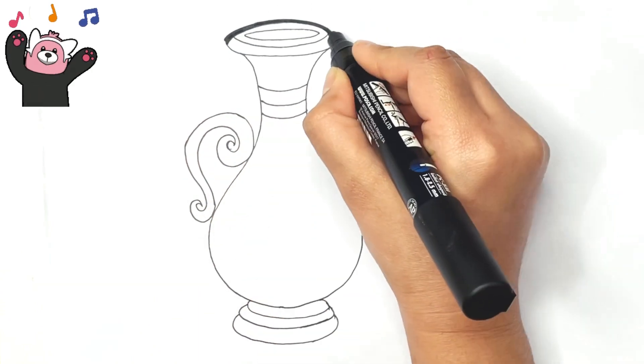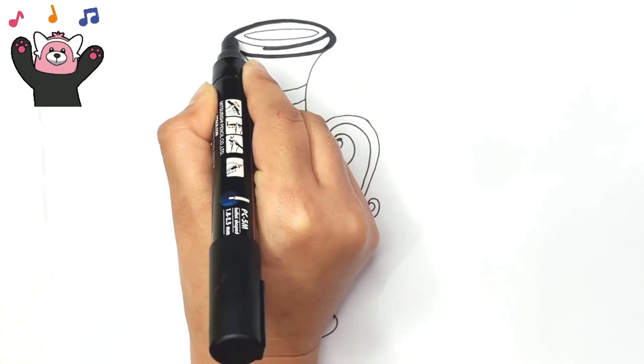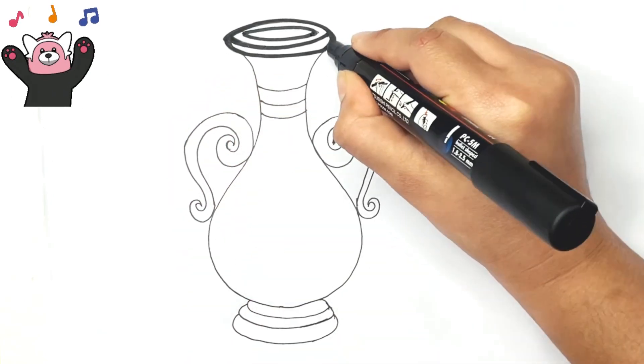Now, our vase is ready for next step. Now, I am highlighting the vase with black marker.